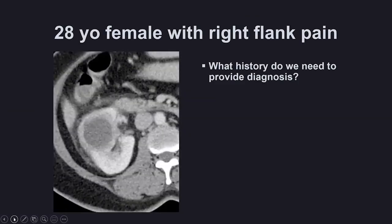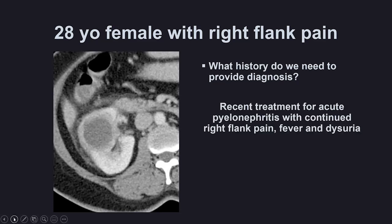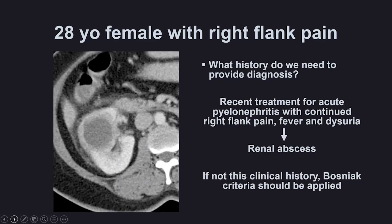Case five: a 28-year-old female with right flank pain and a cystic lesion in the kidney. Clinical history is key here. This patient had recent treatment for pyelonephritis, continued right flank pain, fever, and dysuria. With this imaging appearance and that clinical history, this is a renal abscess. However, if there were no appropriate clinical history for renal abscess, the Bosniak criteria would need to be applied, because this is a cystic renal mass. Clinical history is key to diagnosing a renal abscess.